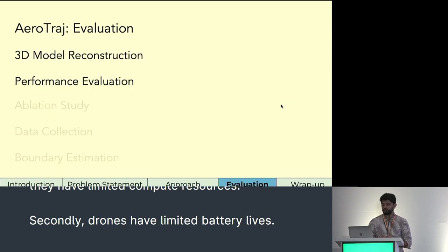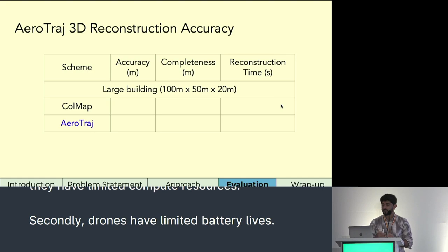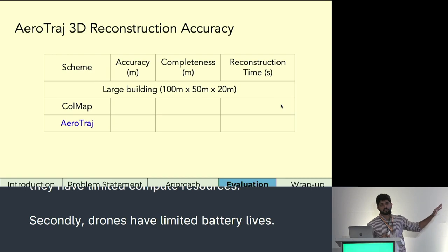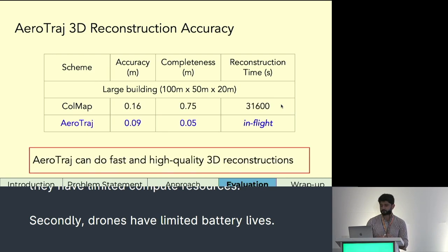We performed extensive evaluations, but for this talk I'm only going to discuss AeroTraj's ability to quickly and accurately reconstruct 3D models. Using AeroTraj and photogrammetry software Colmap, we reconstructed a relatively large building. In this table, accuracy describes how closely we can reconstruct the 3D model and completeness describes how much of the 3D model we can capture — for both, a lower number is better and zero is perfect. AeroTraj can reconstruct the 3D model with centimeter-level accuracy and completeness, which is better than Colmap.